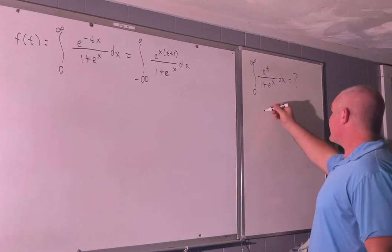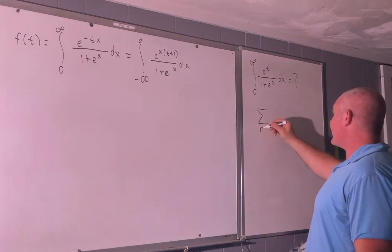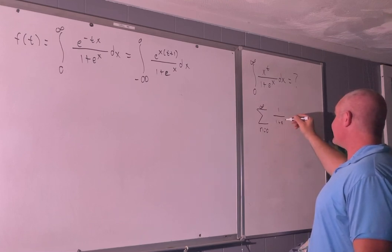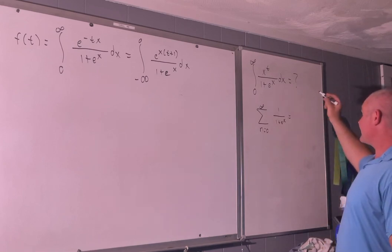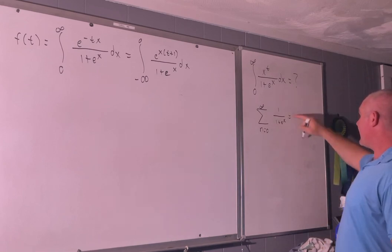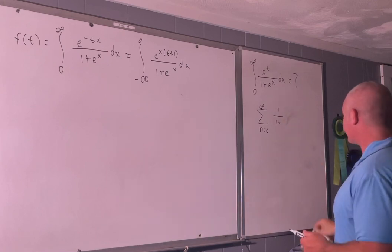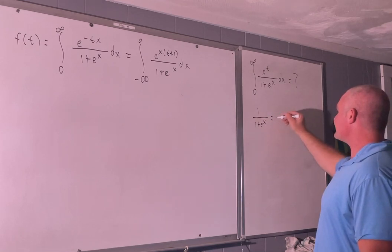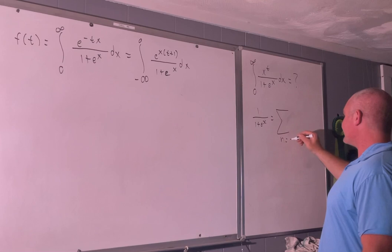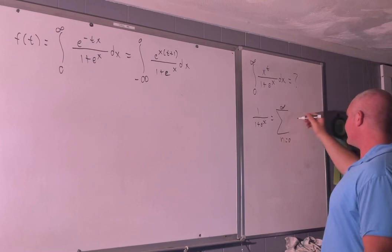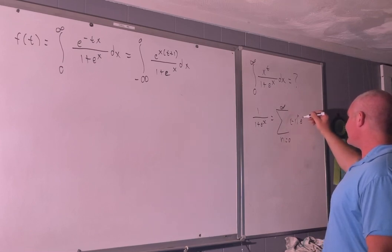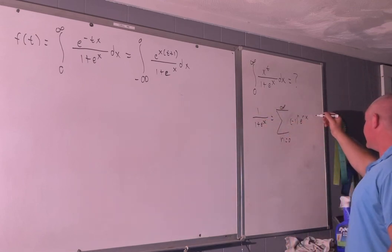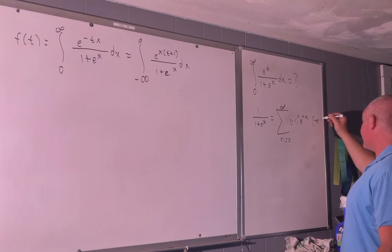Let's recognize that the sum as n goes from 0 to infinity of negative 1 to the n times e to the nx — and by the way, that's good from negative infinity to 0.